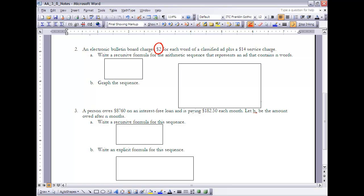Now, it also says that there's a $14 service charge. We've got to be careful because that's not your first term. Your first term is after one word. So after one word, we're going to have the $14 plus the $2 to get a total of $16 for the first word. So when I write that recursively, my first term is going to be $16. And then each additional term is going to be the previous term plus 2. So if I want to find it after two words, then it's going to be the value for one word plus another $2, or $18.